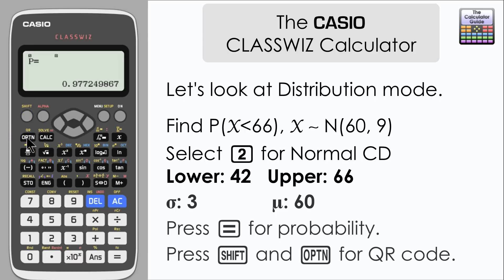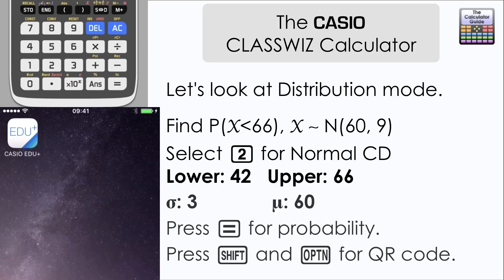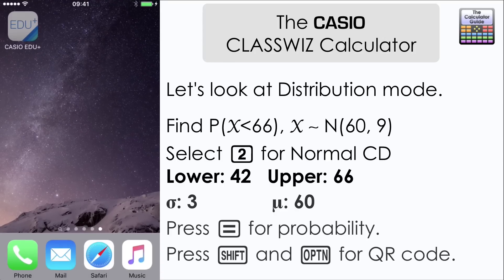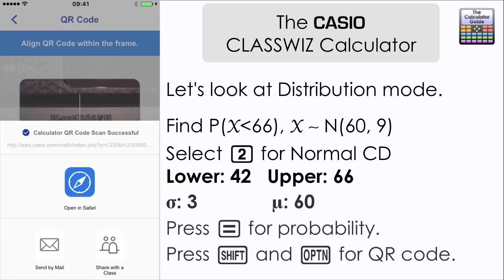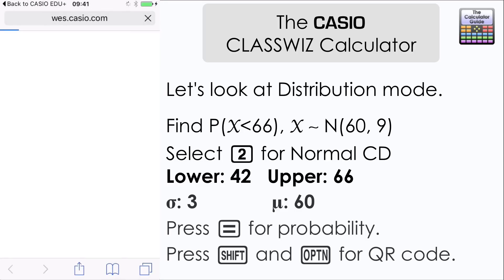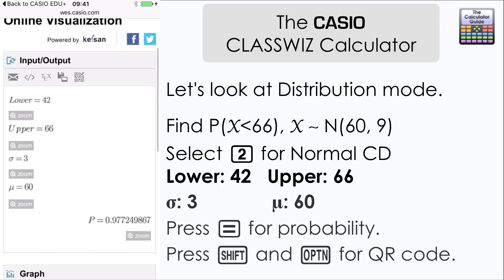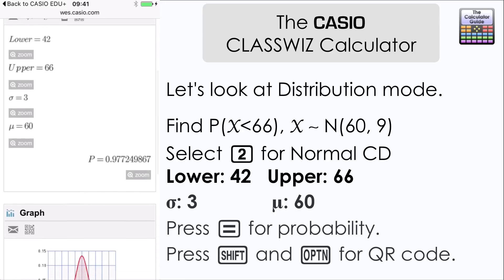So let's see that displayed on a mobile device. We're going to generate a QR code again. This time I'm going to scan in from the actual calculator. I'm going to open in my browser. And then once it's loaded up. We can see that we've got the information that we inputted into the calculator there.